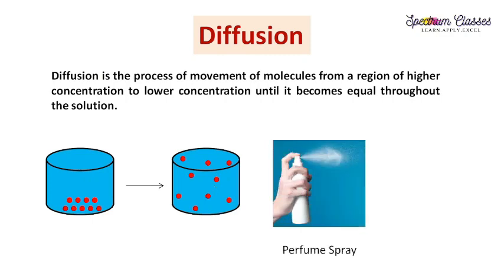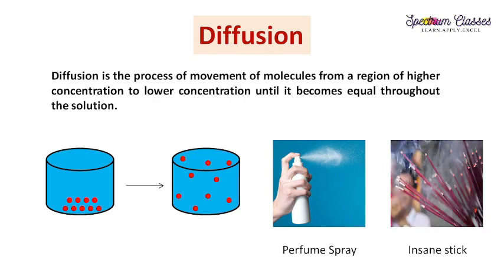Some other household examples include perfume — if you spray it at one corner of your room, you can smell the fragrance at the other corner of that room. Similarly with incense sticks. So these are some household examples of diffusion, and here we are showing the lab activity related to diffusion.